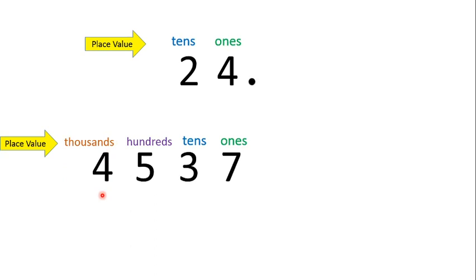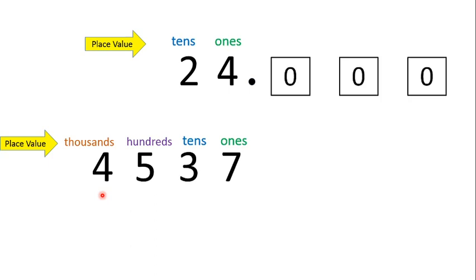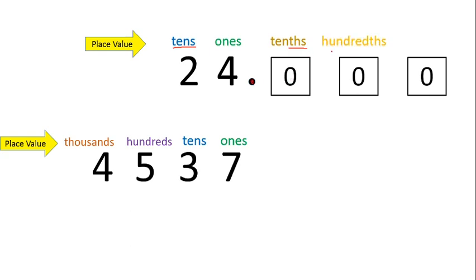Our topic today is about decimals. What is the place value for the number after the decimal point? Still remember? The place value for this one is tenths — notice it is different from 'tens'. This is tens; this is tenths, with the 'th' sound. The next number after the decimal is hundredths, and the last one is thousandths.